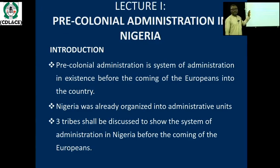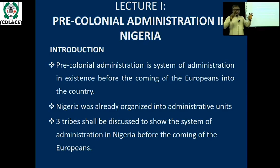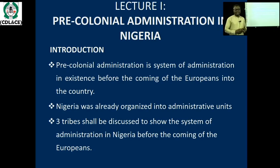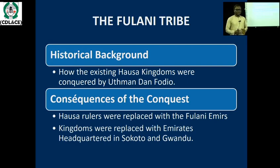Lecture one is titled Pre-colonial Administrative System in Nigeria. When we are talking about the pre-colonial system of administration in Nigeria, we are talking about the system of administration in existence before the coming of the Europeans into the country. Before the Europeans came, there existed organized administrative units in the various regions of the country. For the purpose of this topic, we are going to look at three tribes and use them as case studies: the Fulani, the Yoruba, and the Igbo.